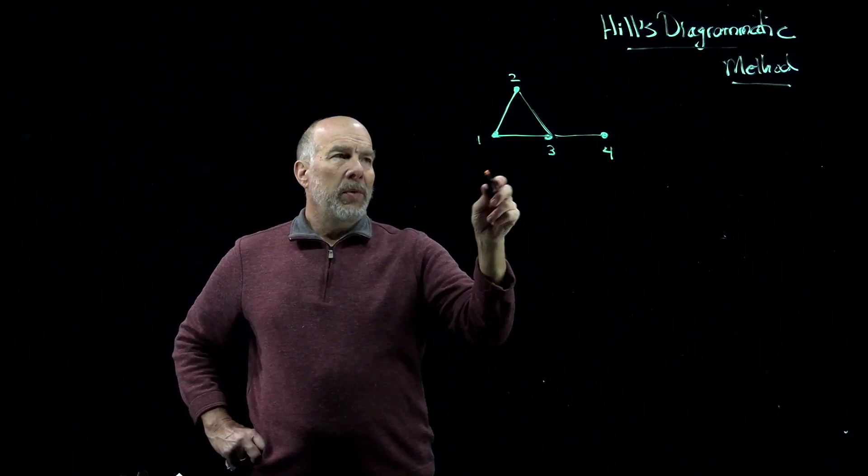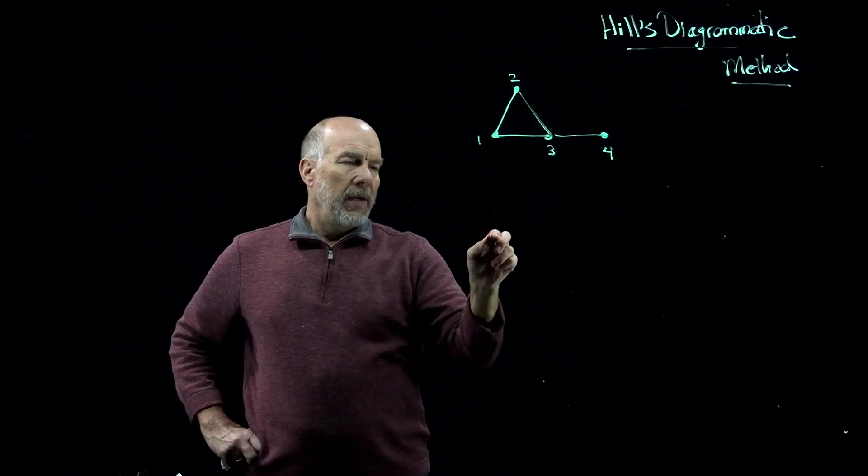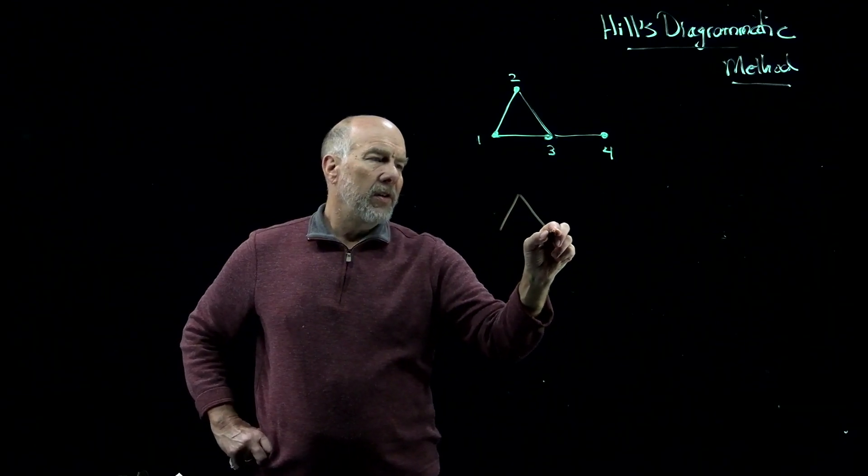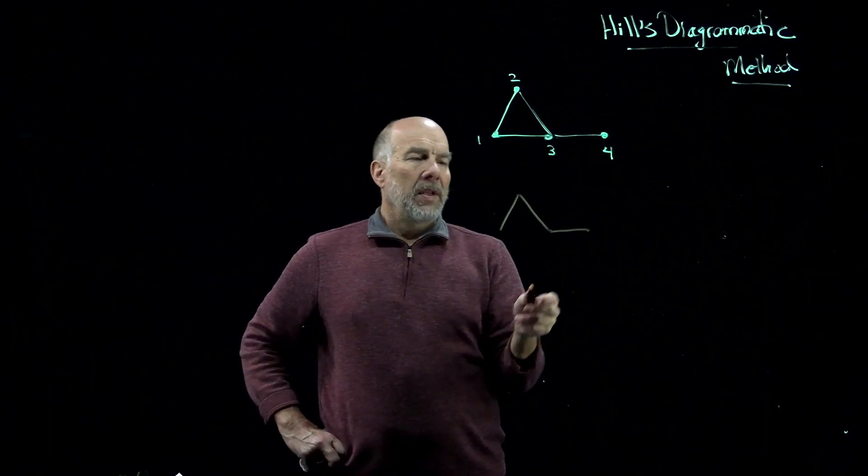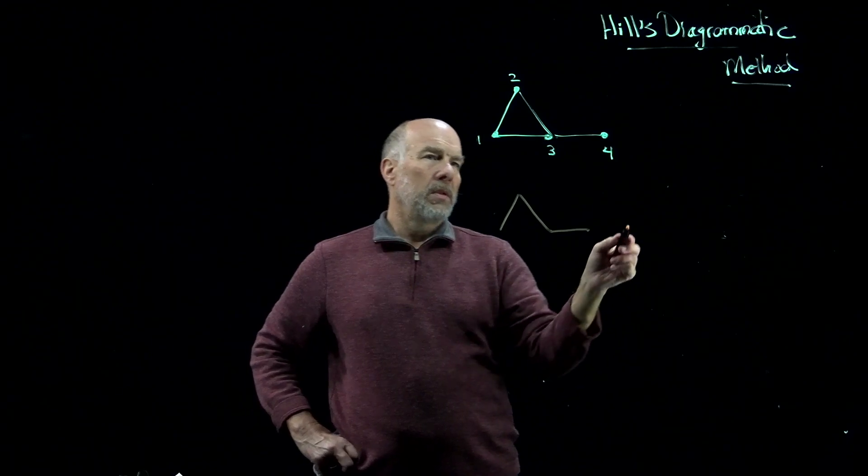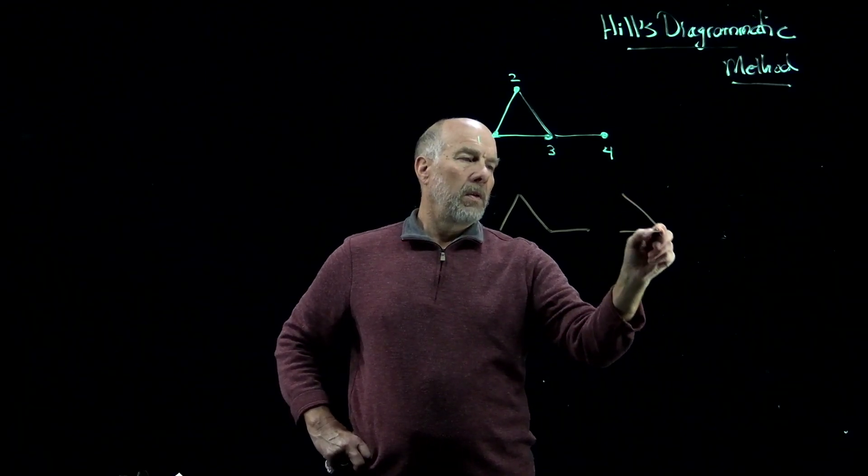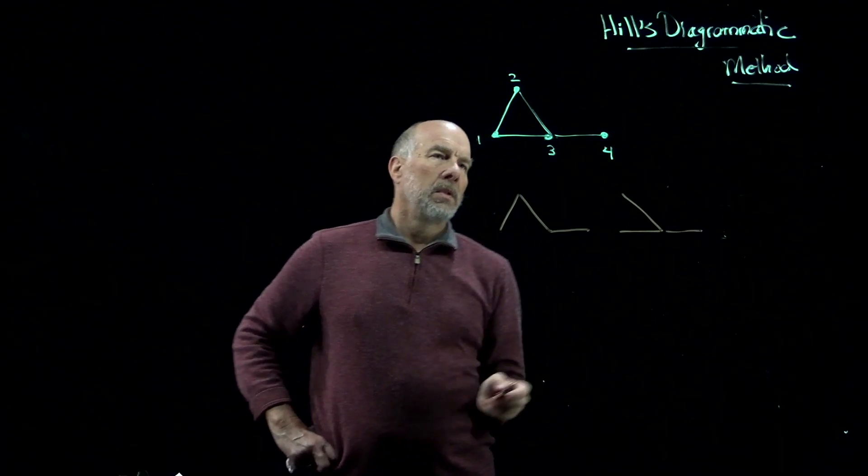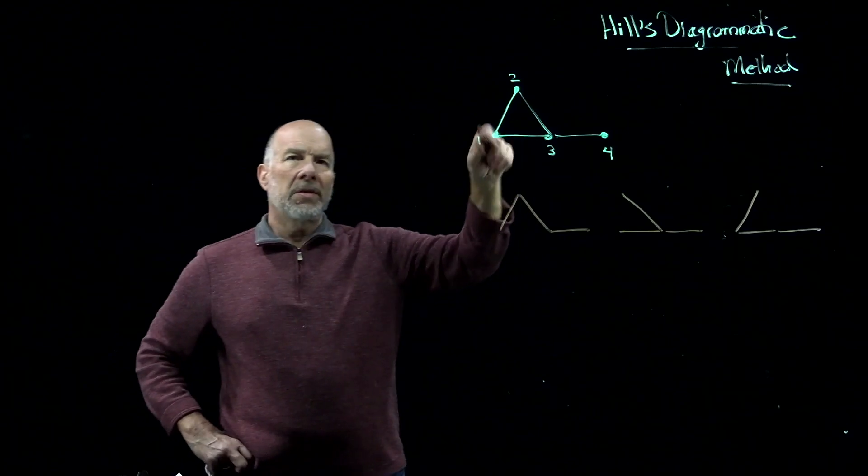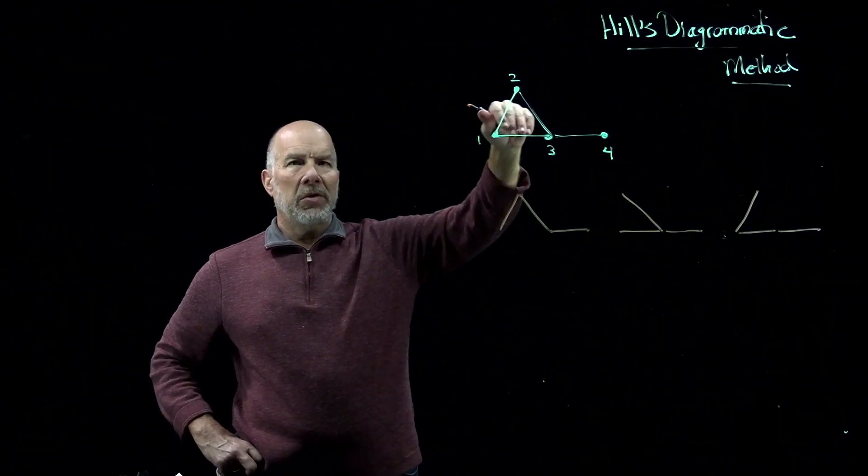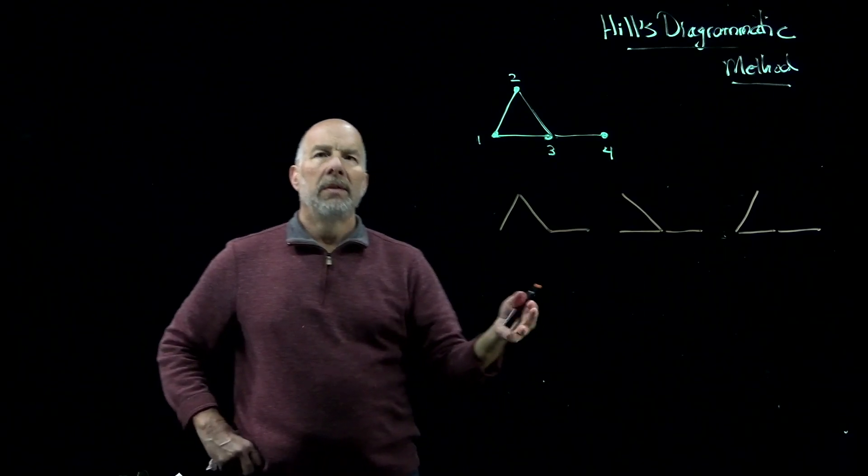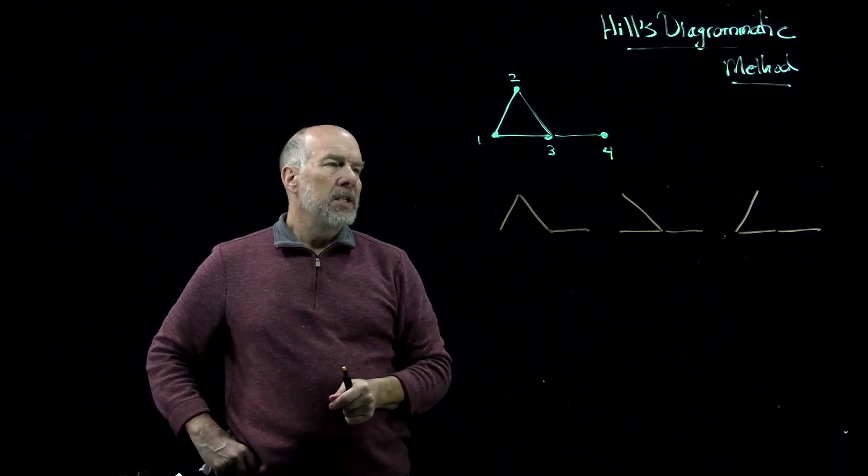A spanning tree is not going to have a cycle, so let me draw three different undirected graphs that don't have cycles that span this graph here. So there's this one, this one, and this one. The cycle has three edges, I can get a spanning tree by removing any one of the edges, and these are the three unrooted, undirected spanning trees.